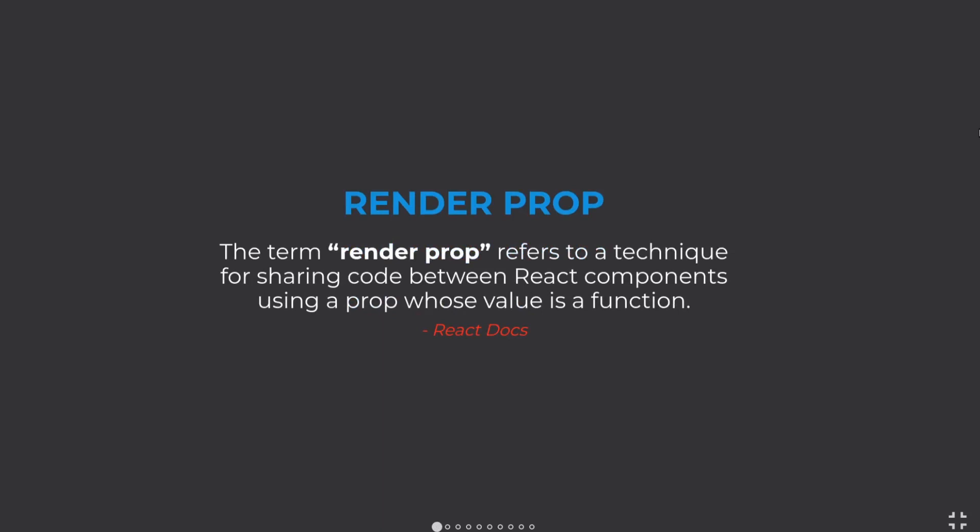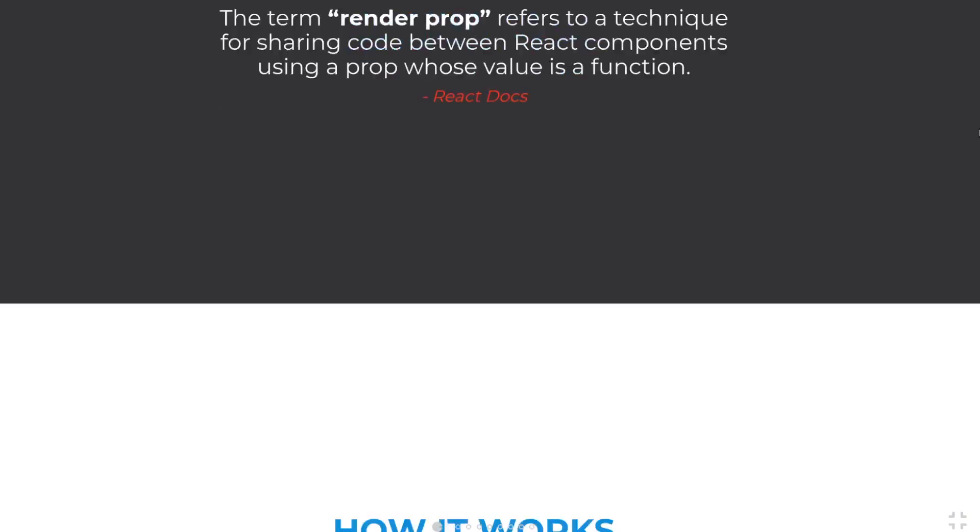We're going to discuss two design patterns in this video. The first — and most important one in my opinion — is the Render Prop. It's used by many well-known libraries like React Router and Redux Connect. The term 'render prop' refers to a technique for sharing code between React components using a prop whose value is a function. It allows a component to take a function as its children, and through that function provide props down to the child component.